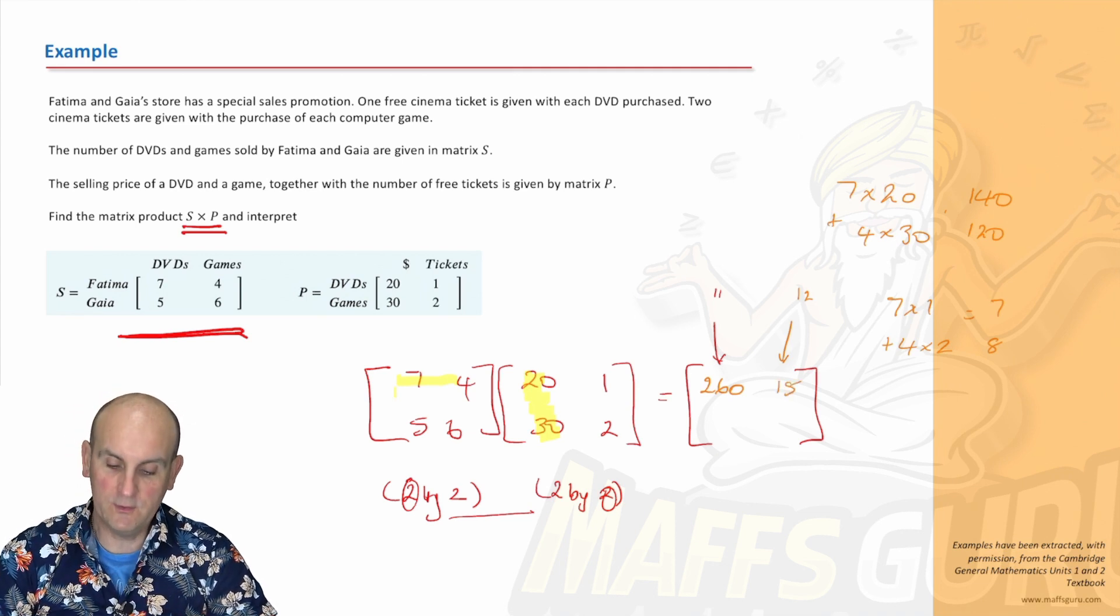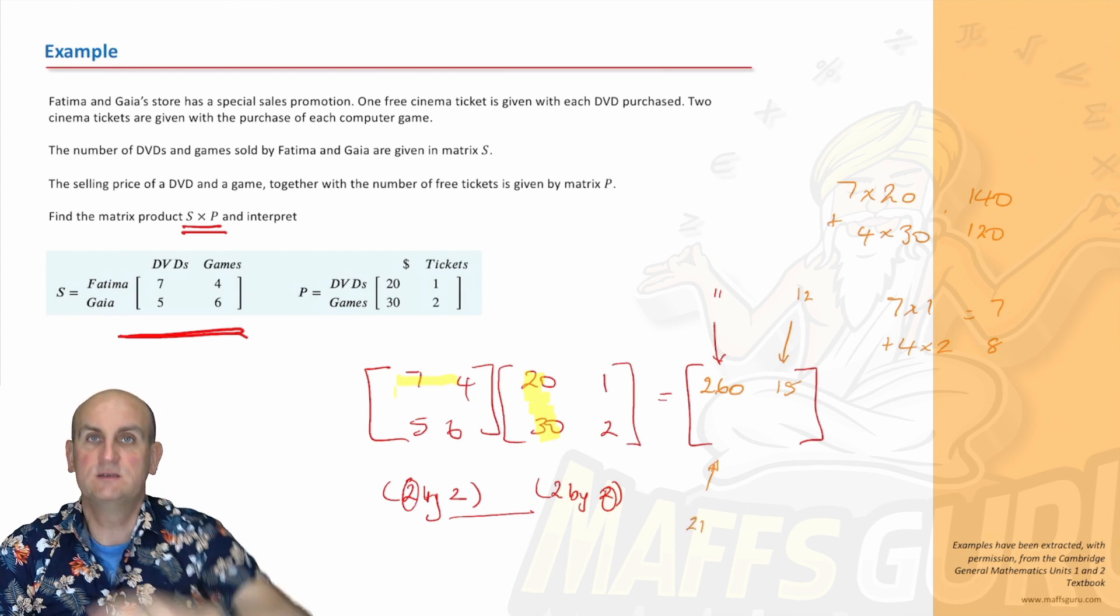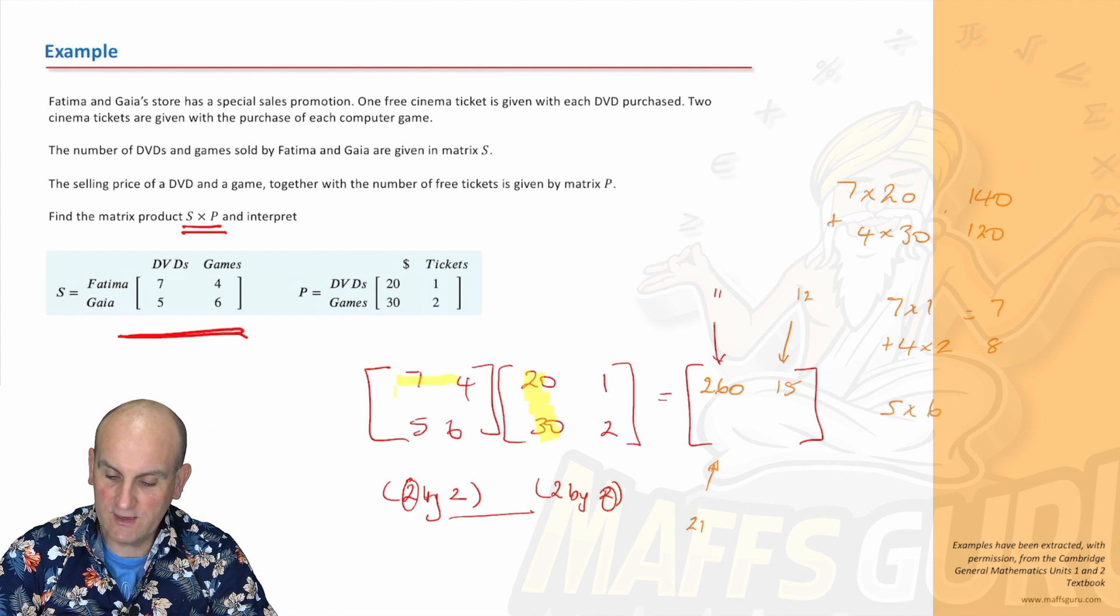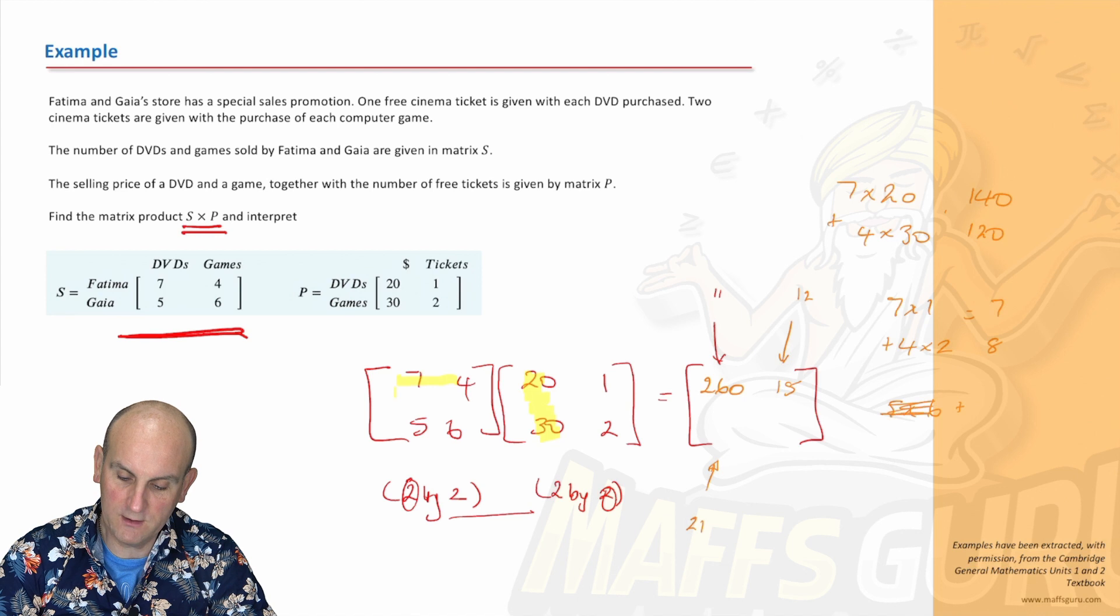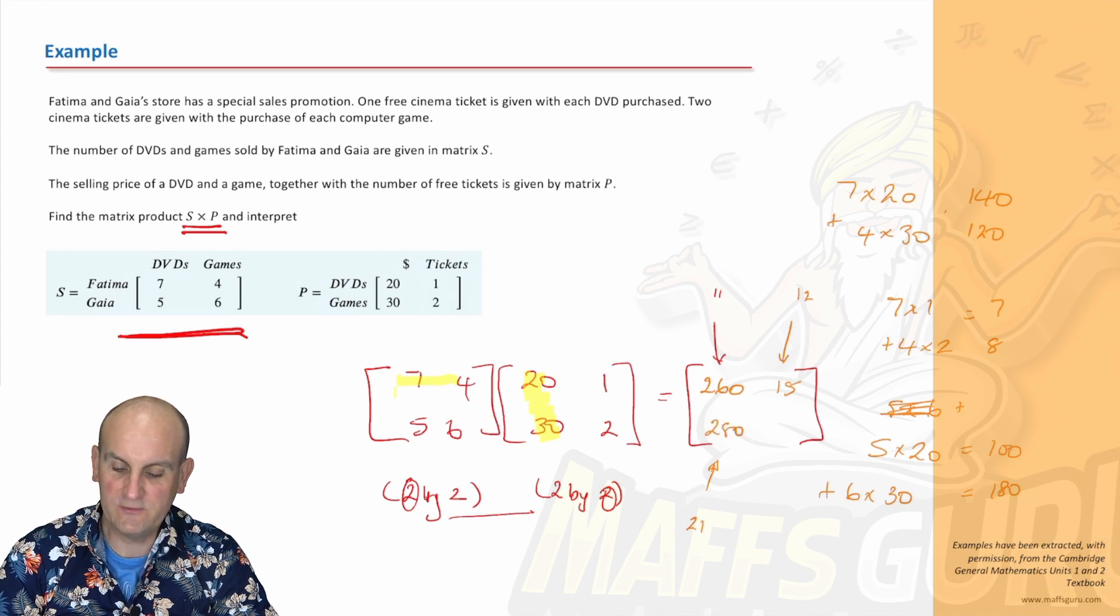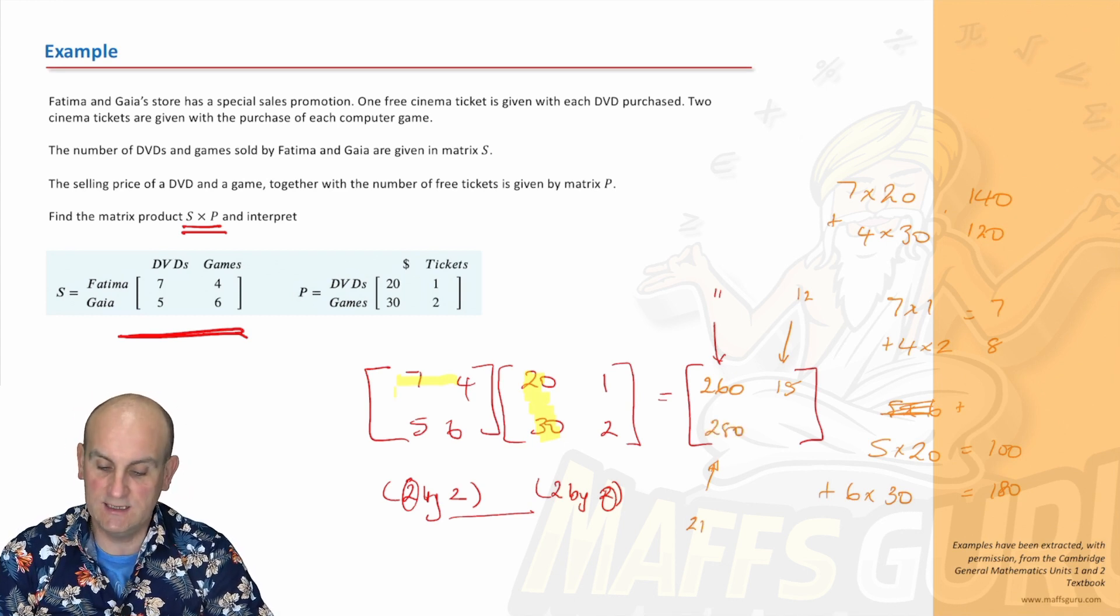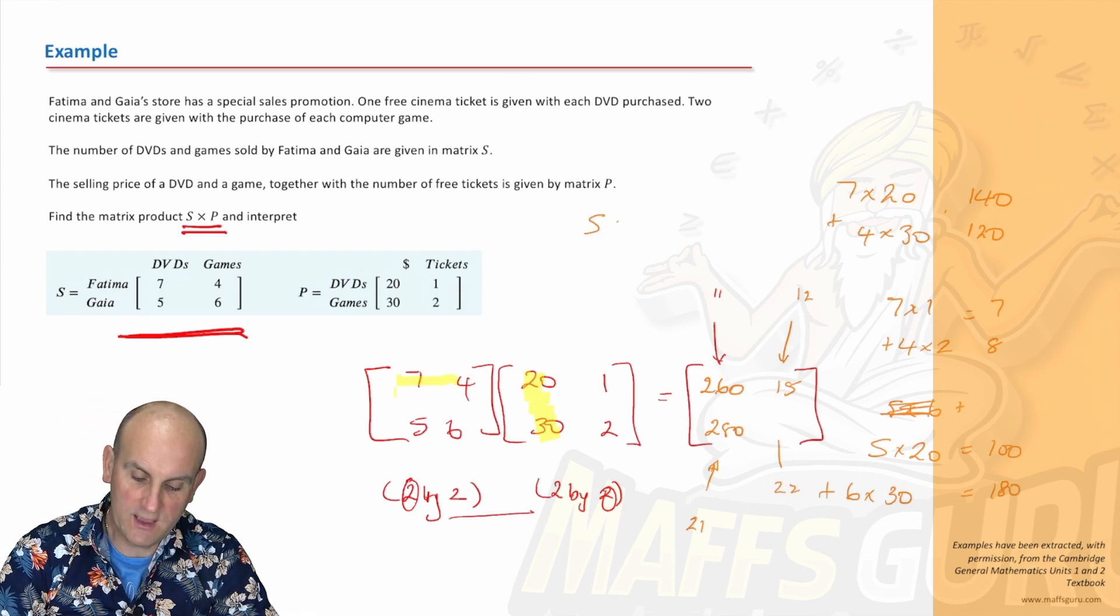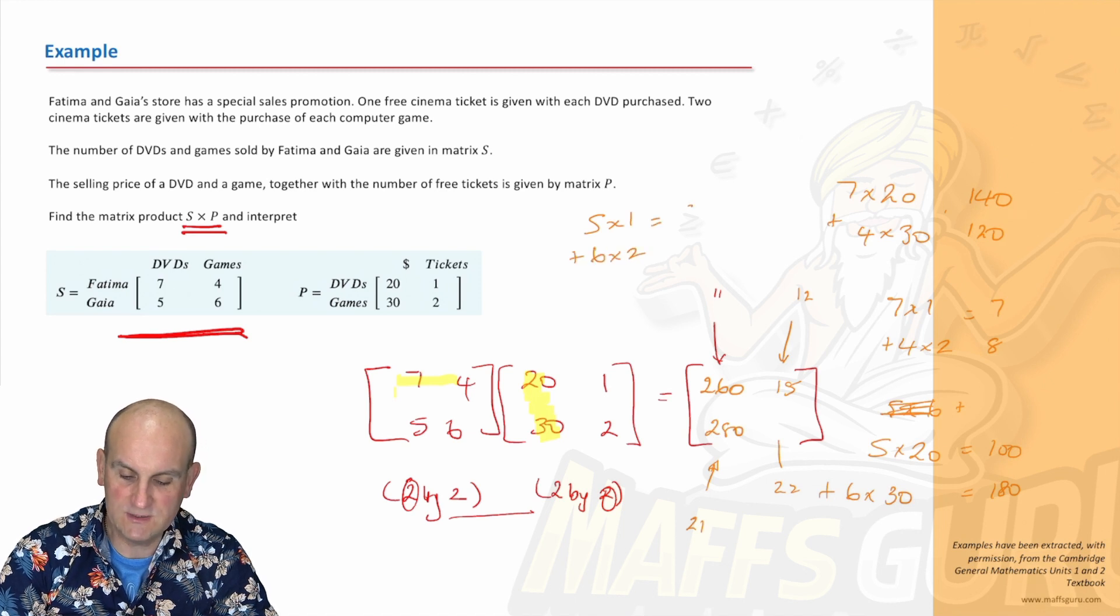My address is now 2,1. Second row, first column. We're now going to do 5 times 20 plus 6 times 30. 5 times 20 is 100, 6 times 30 is 180, add those together gives me 280. And the last one is 2,2. Second row, second column. We're going to do 5 times 1 plus 6 times 2, which is 5 plus 12, which is going to give me 17.